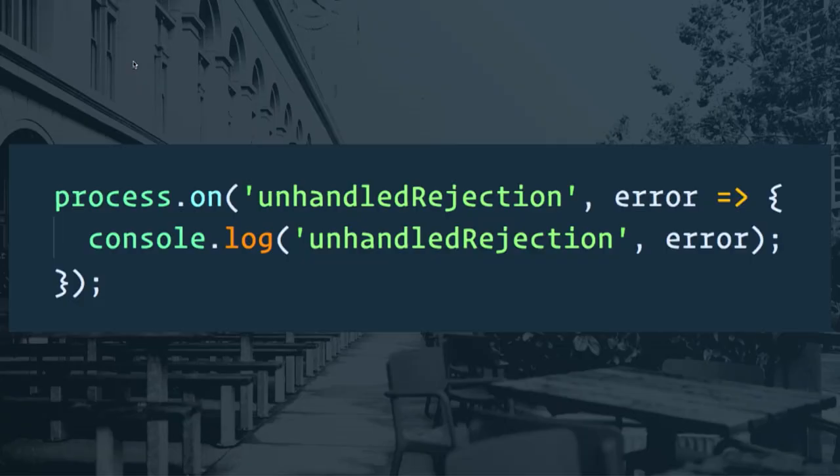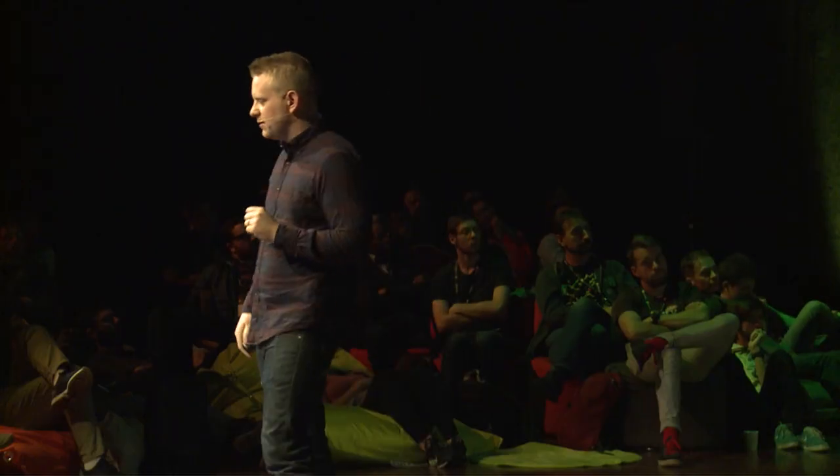The fifth option is really important if you're writing Node. Node will soon exit the process if your promise is rejected — meaning if you have any code that doesn't handle an error on a promise, the entire process will exit and your app could go down. So you just listen for the unhandledRejection event, and when that happens you can deal with it accordingly — probably send it off to some error handling service so you can log it and address it in your code.